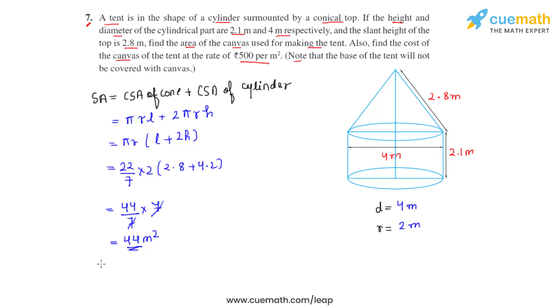The next part is to calculate the cost of the canvas of the tent. So we write that cost of the canvas used to make the tent will be equal to the area of the canvas which is made into use times the rate at which it has been sold.